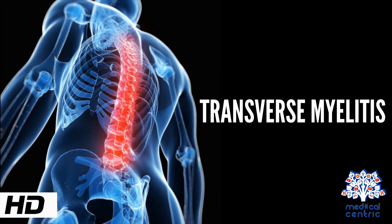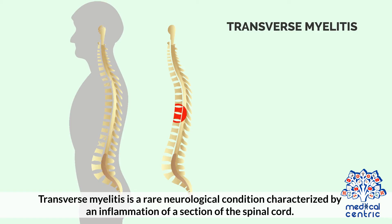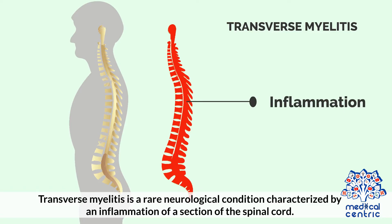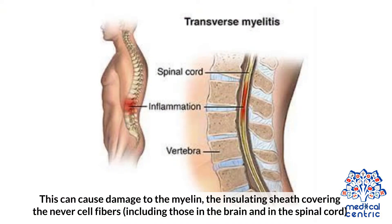Today's topic is transverse myelitis. Transverse myelitis is a rare neurological condition characterized by an inflammation of a section of the spinal cord. This can cause damage to the myelin, the insulating sheath covering the nerve cell fibers, including those in the brain and in the spinal cord.